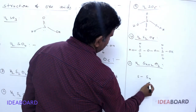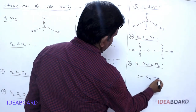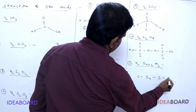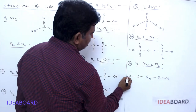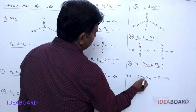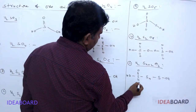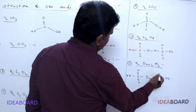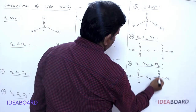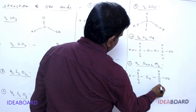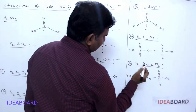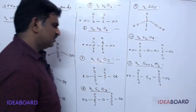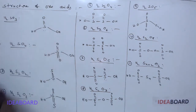The last structure is polythionic acid, with formula Sₙ₊₂O₆. The structure has S–Sₙ–S with OH groups on the terminal sulfur atoms and oxygen atoms on each terminal sulfur. The N middle sulfur atoms form the chain. These are all the different oxo acids of sulfur and their structures.